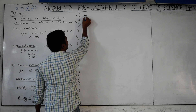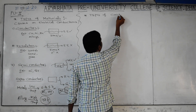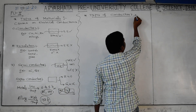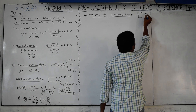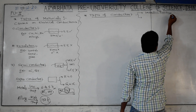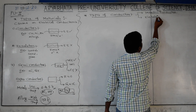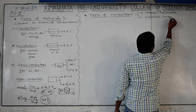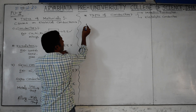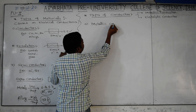Now I will explain a very important concept: types of conductors. Mainly we have two types - one is metallic conductors, which is important for competitive exams, and another one is electrolytic conductors. I will give a detailed explanation of both.